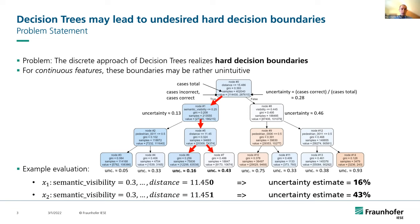However, there is a problem with these decision trees because they rely on hard decision boundaries as a split criterion. For continuous feature values, this can lead to uncertainty estimates that are less intuitive. For example, if we take the previous data point x1 and slightly increase its continuous distance value to obtain x2, the uncertainty estimate for x2 is now derived from another leaf and is much larger, at 43%. It would be intuitive that the uncertainty of detecting a pedestrian increases with increasing distance, but a small variation should not have such a large influence — the uncertainty should not increase that drastically.